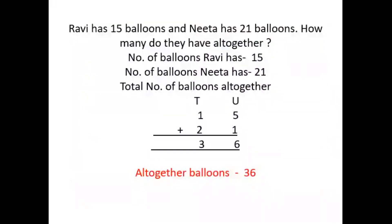Next sum. Ravi has 15 balloons and Neeta has 21 balloons. How many do they have altogether? Again, 'altogether' indicates addition. Number of balloons Ravi has is 15. Number of balloons Neeta has is 21.